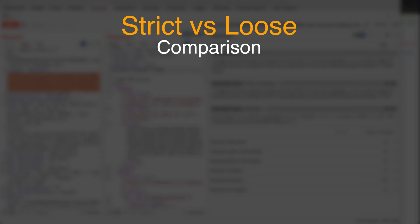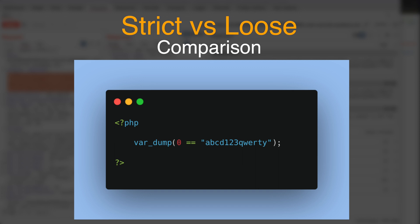Now we get to the most interesting part. Let's look at loose comparison between the integer 0 and a random alphanumeric string. The result of this comparison is also true. When PHP performs a loose comparison between an integer and a string, it first converts the string to integer based on its initial number. If the string doesn't start with a number, it converts the entire string to integer 0. That's why the result of this comparison is true.